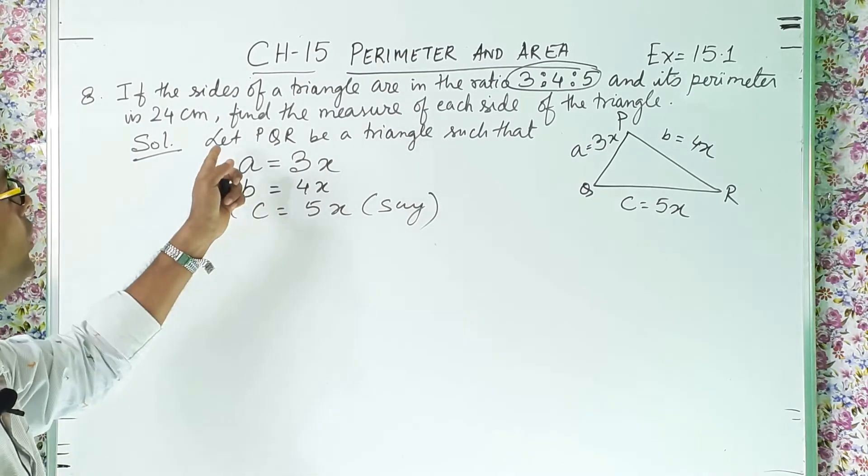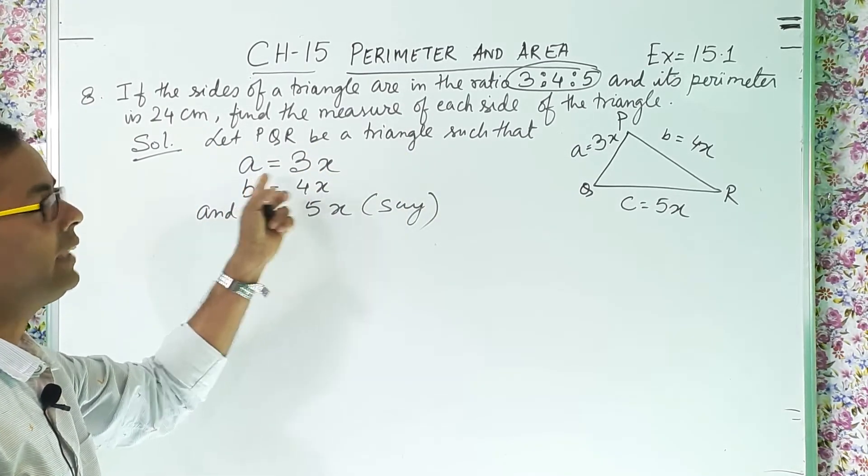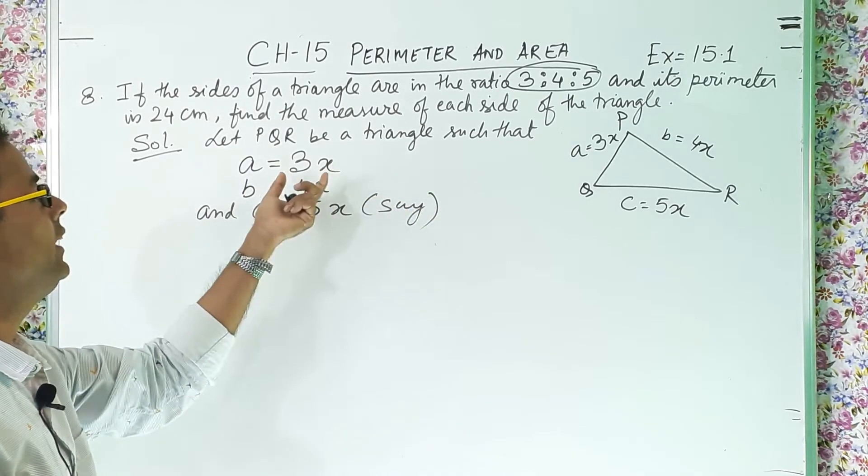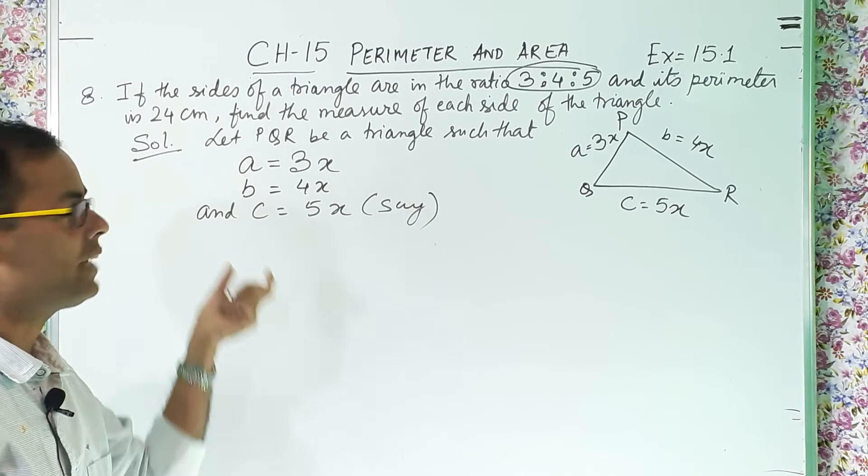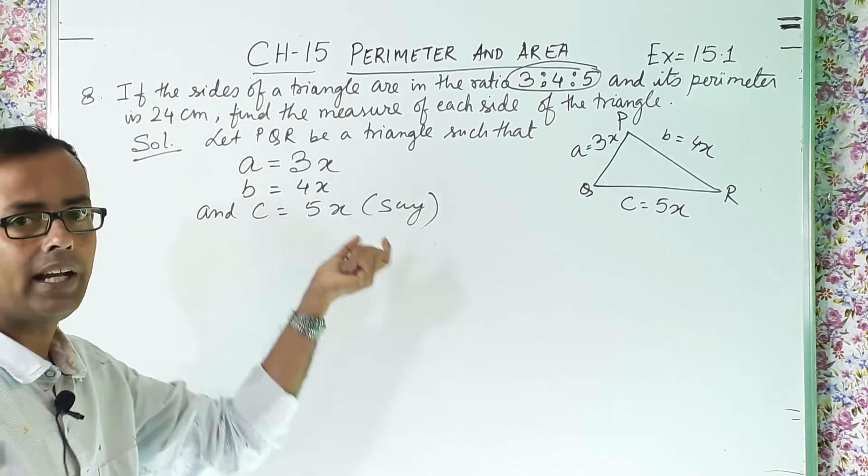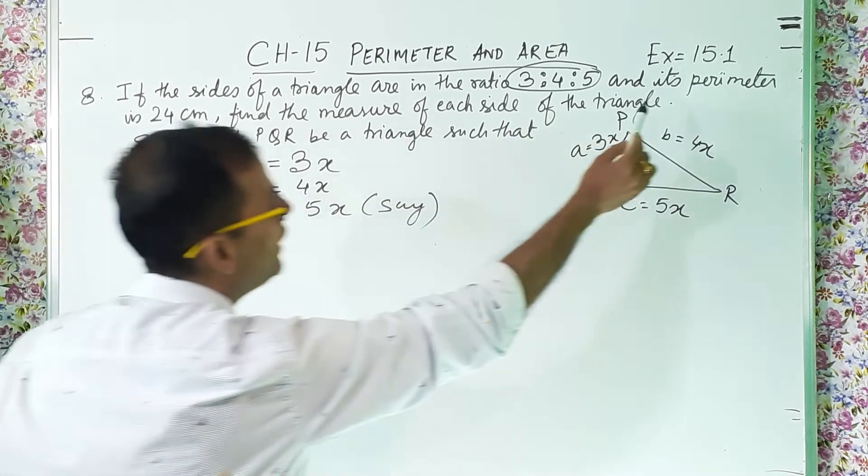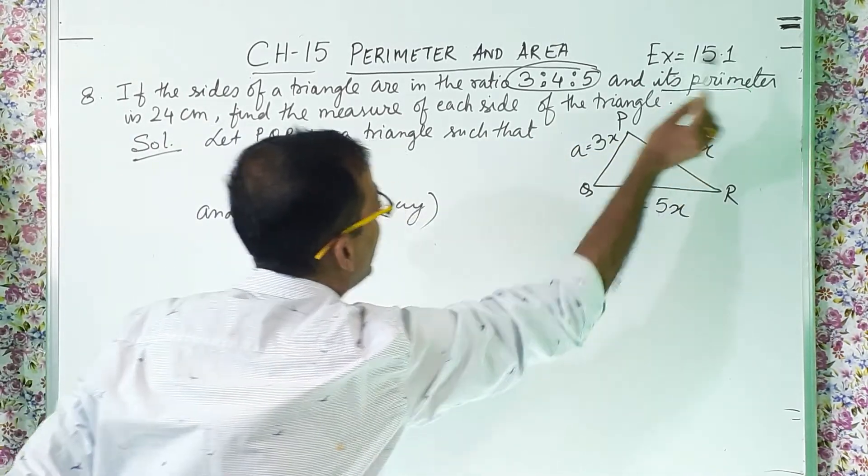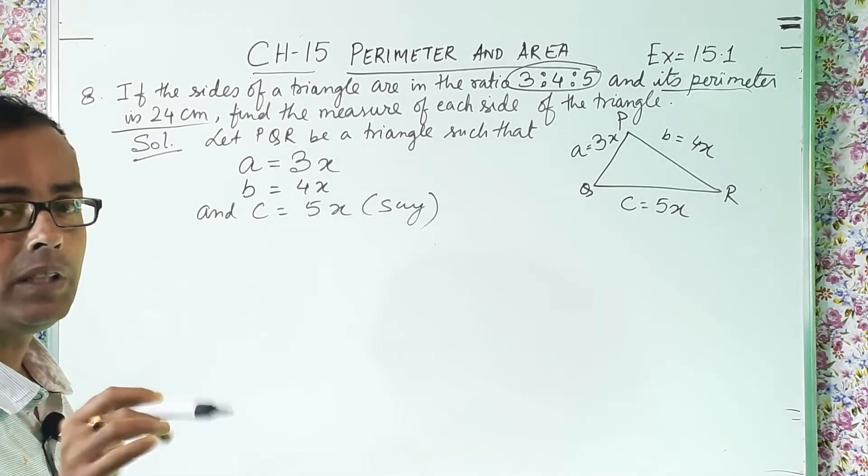Now let us come back. So what we wrote? Let PQR be a triangle such that small a, that means one side, first side is 3x. Small b, that is the second side as 4x and small c is the third side as 5x. Now and its perimeter, now see the question. And its perimeter is 24 centimeter. Now perimeter is told.